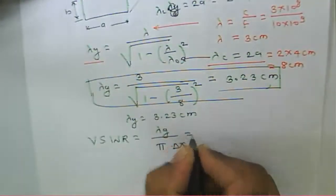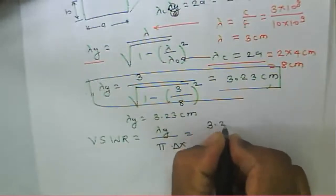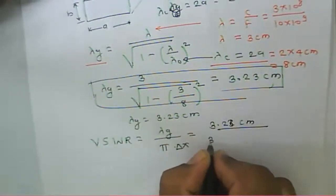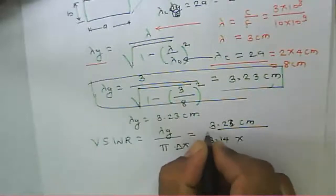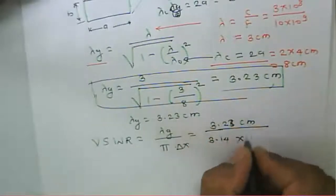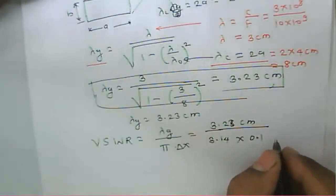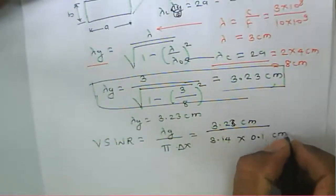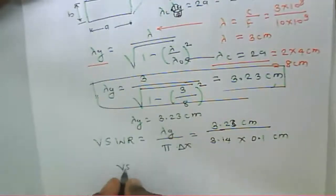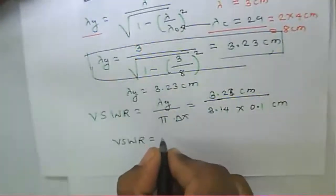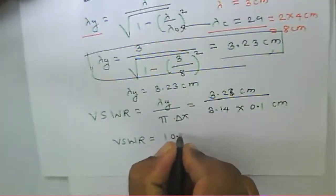Using lambda g, we calculate the VSWR. VSWR is equal to lambda g divided by pi times del x. Lambda g is equal to 3.2 centimeters, divided by pi times del x, where del x equals 0.01 centimeter, that is 1 mm. After solving we get the VSWR value.